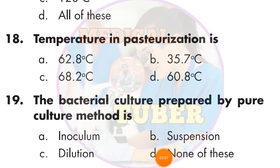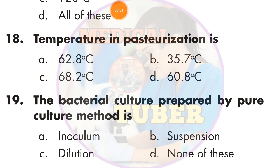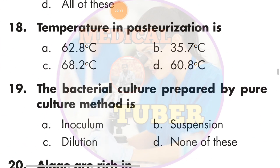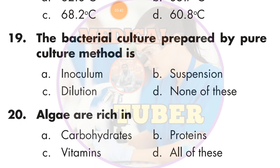Question number 18: The temperature of pasteurization — the answer is A — 62.8 degrees Celsius, because milk is heated at 62.8°C during pasteurization, as all elements are destroyed above this temperature.